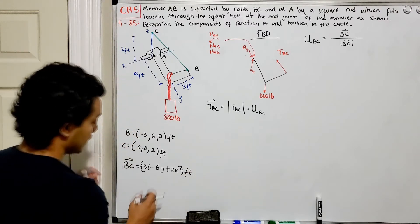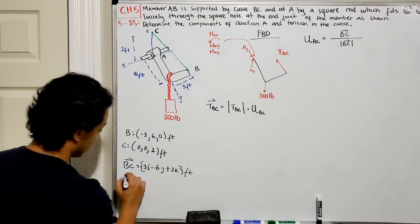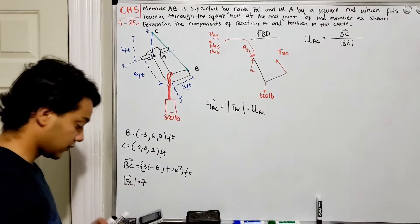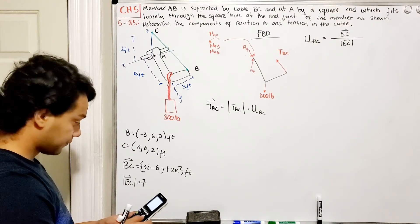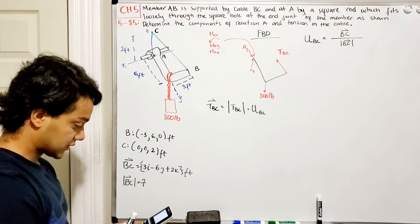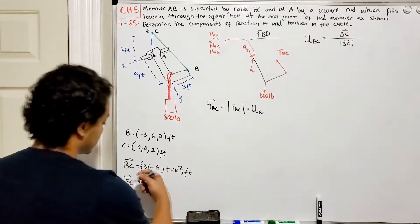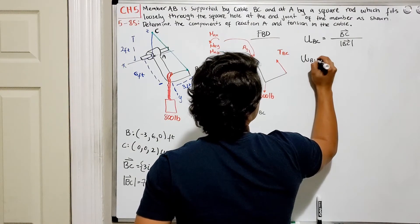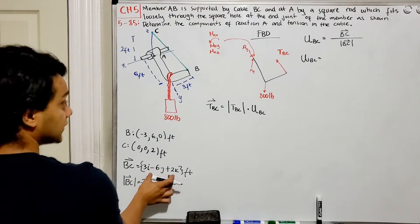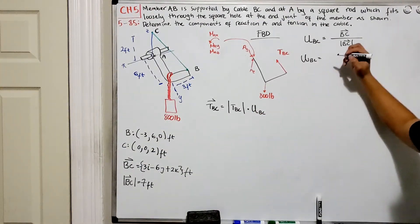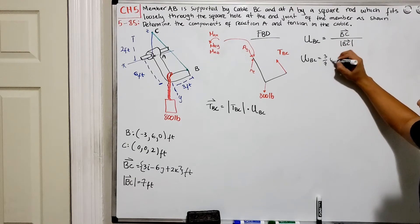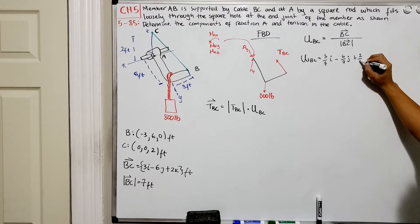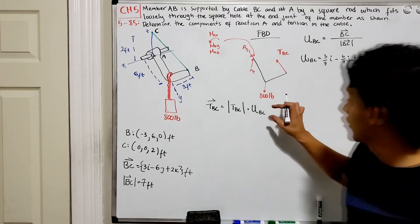So vector BC is 3i − 6j + 2k feet. The magnitude is the square root of (3² + (−6)² + 2²) = square root of (9 + 36 + 4) = 7 feet. Therefore the unit vector BC is (3/7)i − (6/7)j + (2/7)k. We've now found the unit vector for BC.